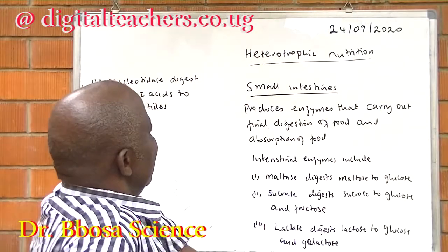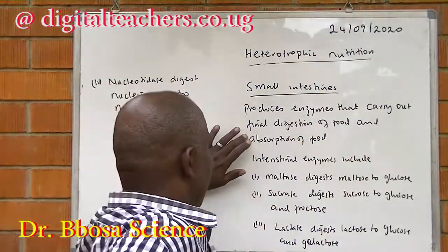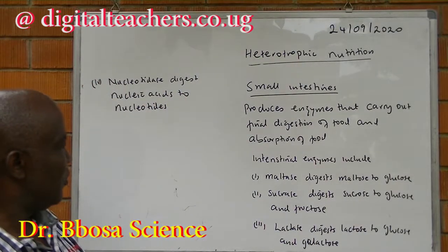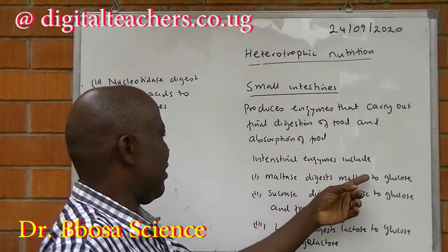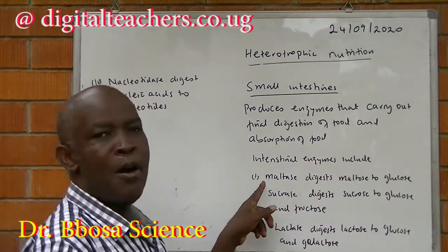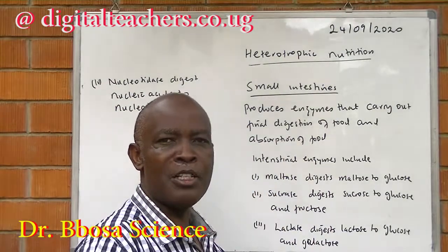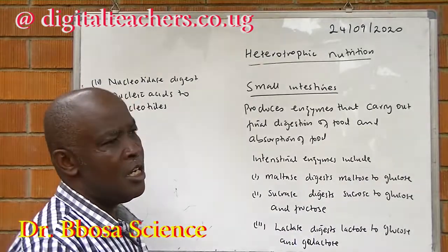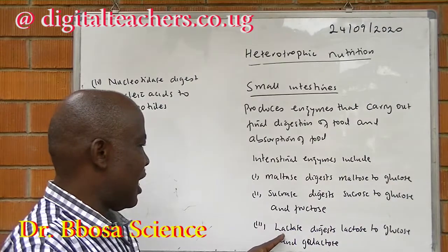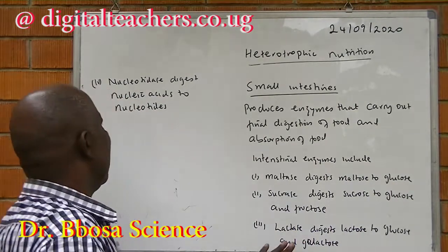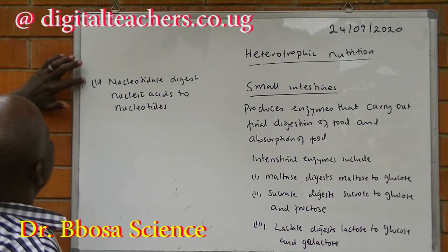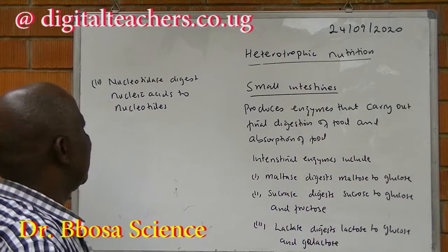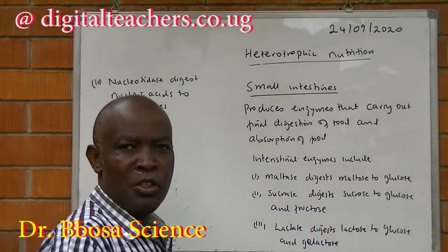The small intestine produces enzymes that carry out final digestion and absorption of food. Intestinal enzymes include maltase — digests maltose to glucose; sucrase — digests sucrose to glucose and fructose; lactase — digests lactose to glucose and galactose; and nucleotidase — digests nucleic acids to nucleotides.